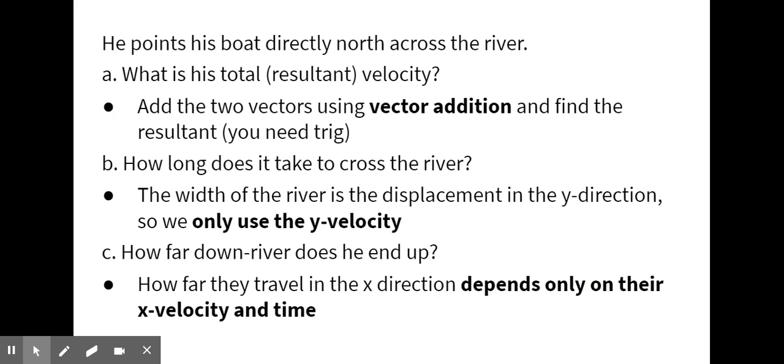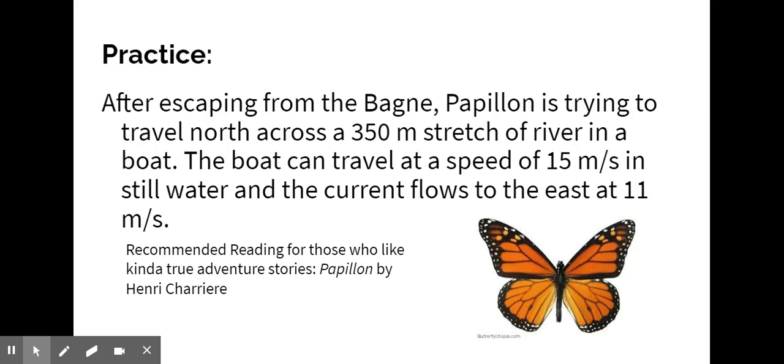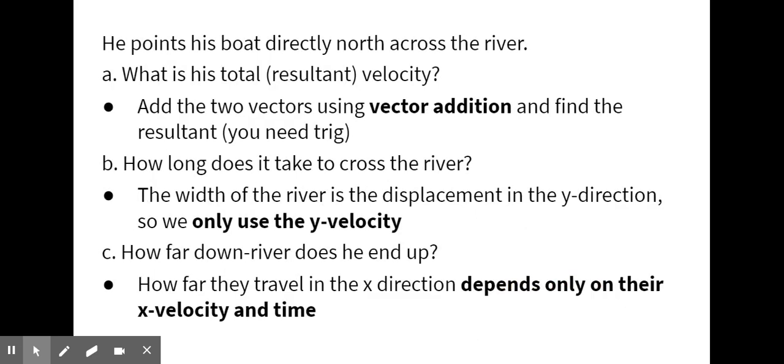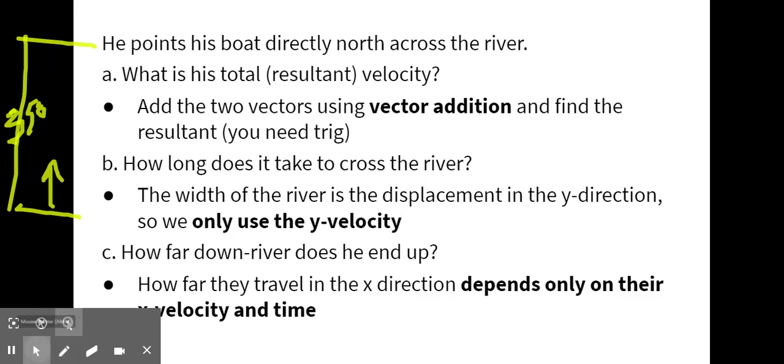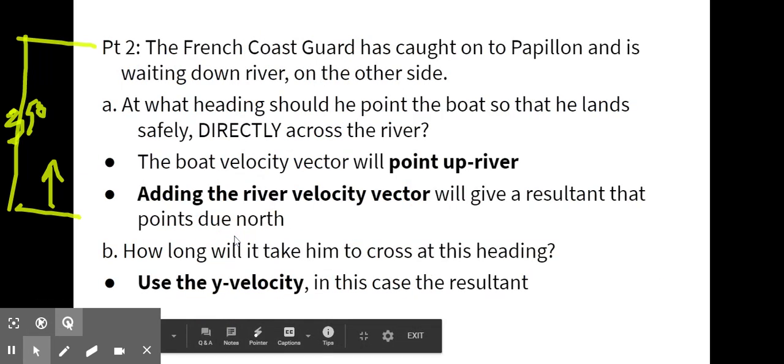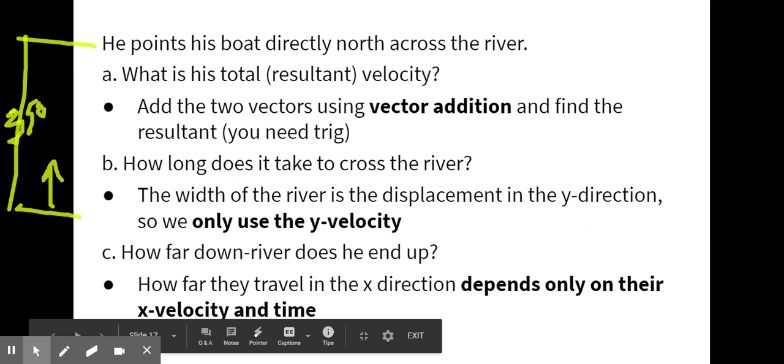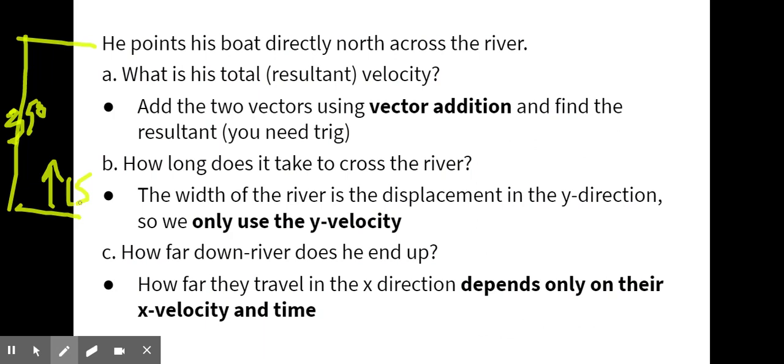Okay, so we have this situation set up. He puts his boat directly north across the river. What is his total or his resultant velocity? So first what we need to do is we need to draw a picture. We have a 350 meter stretch of river. The boat can travel 15 meters per second, and the currents flowing east at 11 meters per second. So here is our 350 meter stretch of river, and we have our boat velocity pointed north at 15 meters per second, and then the current is 11 meters per second to the east.